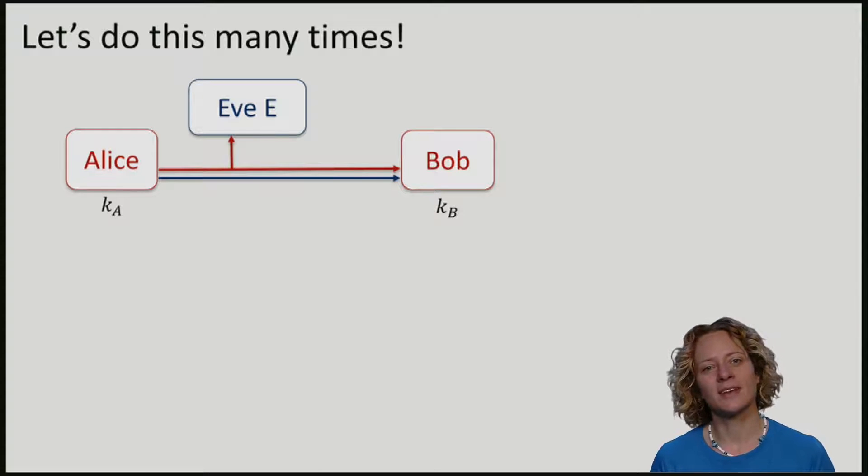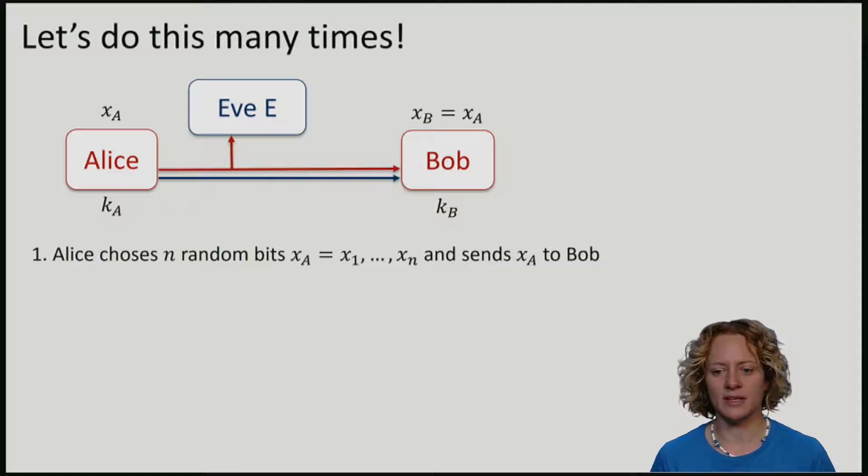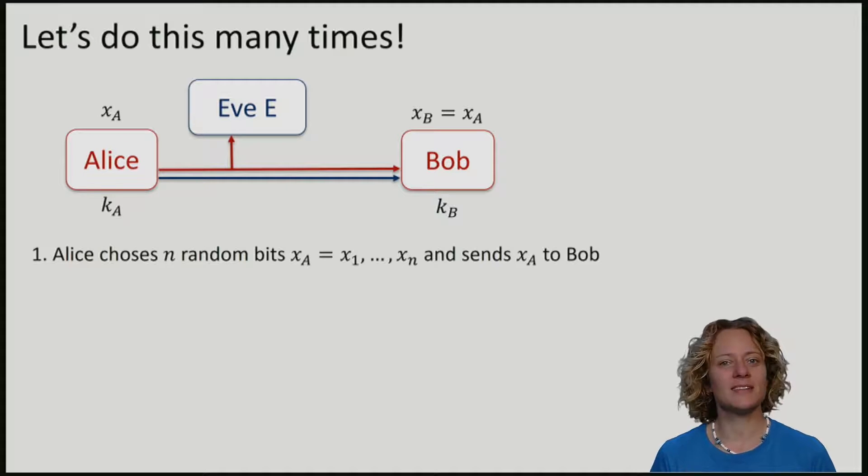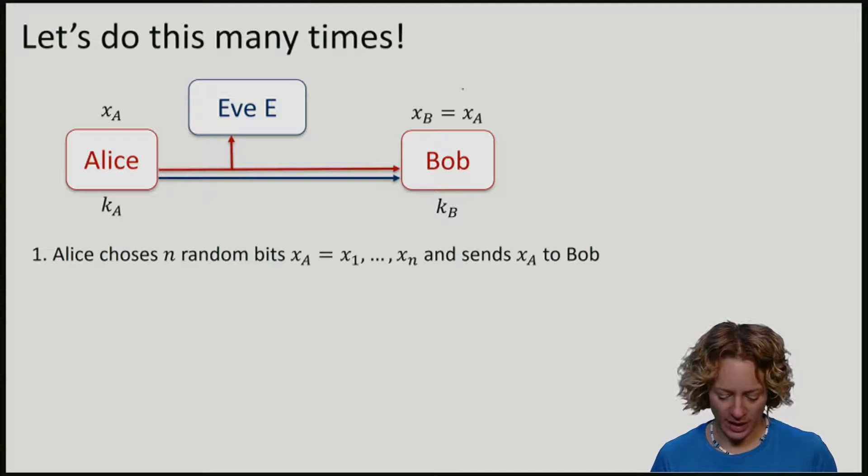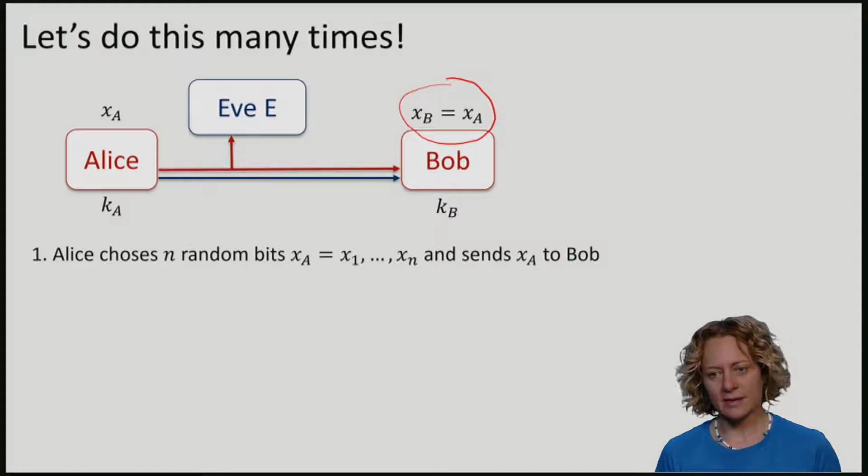The answer to this is that we are going to do the same procedure many times. In our protocol, Alice chooses n random bits, an entire string x1 up to xn, and she sends it bit by bit over to Bob. Remember that Bob receives the bits perfectly. So now Bob has a string xb that is exactly equal to the string of Alice.